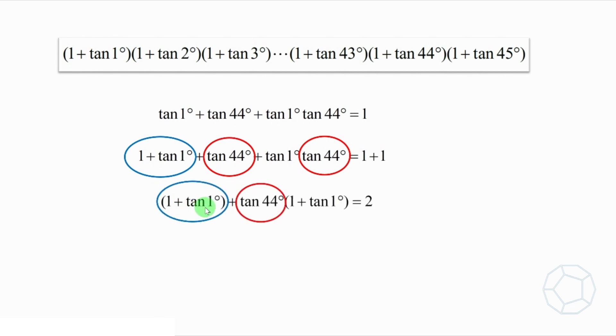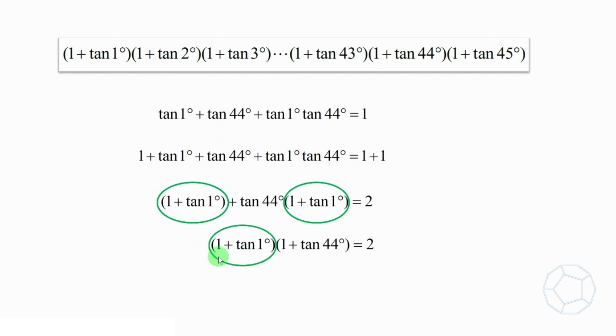So the first group is bracket 1 plus tangent 1 degrees, and the second group is tangent 44 degrees times bracket 1 plus tangent 1 degrees. At this point, we have an extra factor 1 plus tangent 1 degrees, so we can further take it out. Therefore, we have 1 plus tangent 1 degrees times 1 plus tangent 44 degrees equals to 2. We get a product of two terms, and that's exactly what we are looking for.